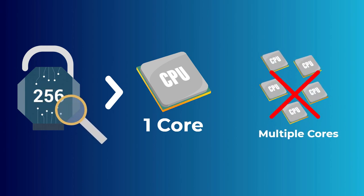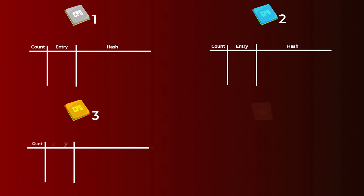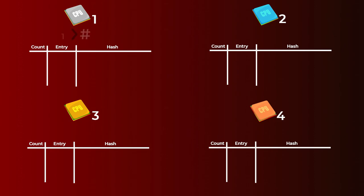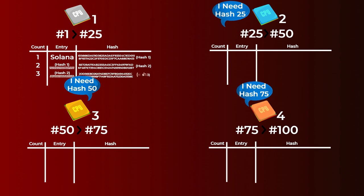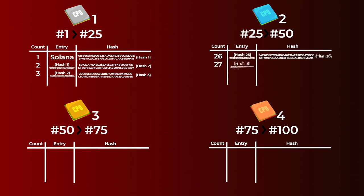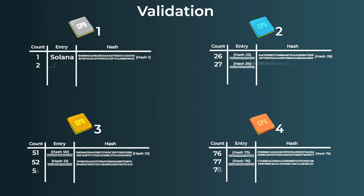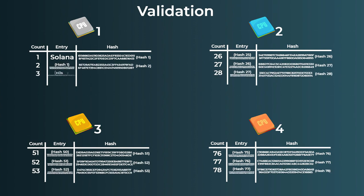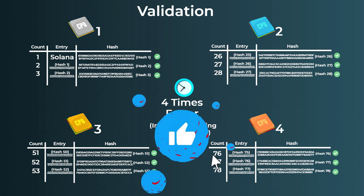This is actually very hard because leaders can only use a single CPU core to generate these hashes, so having many CPU cores won't help run the hash function faster. For example, if you split 100 hash runs across four cores, the other cores must wait for the previous hash output — so only the first core runs while others idle. Validation, on the other hand, can be done by multiple GPU cores simultaneously. Since we already have the hashes, verifying them can be split across four cores, making validation four times faster.